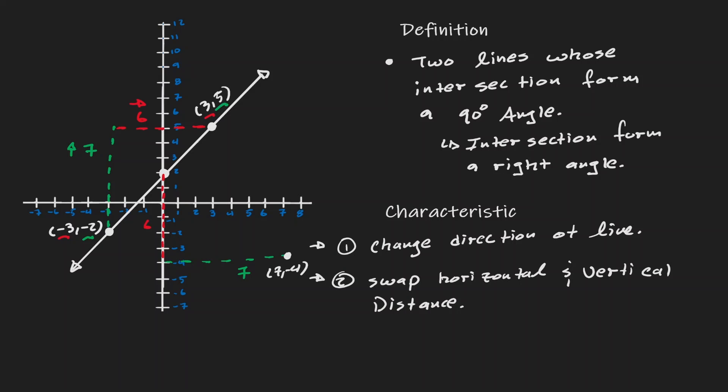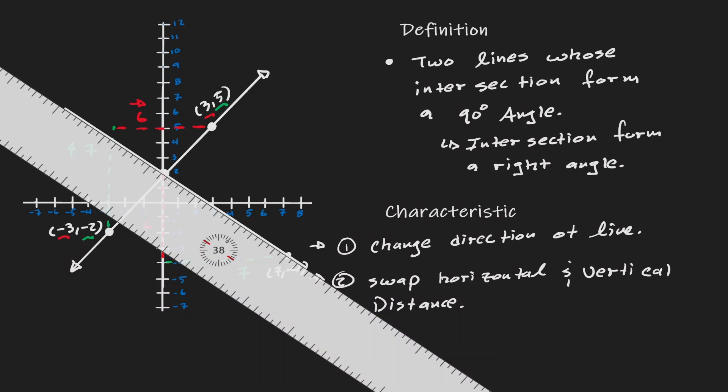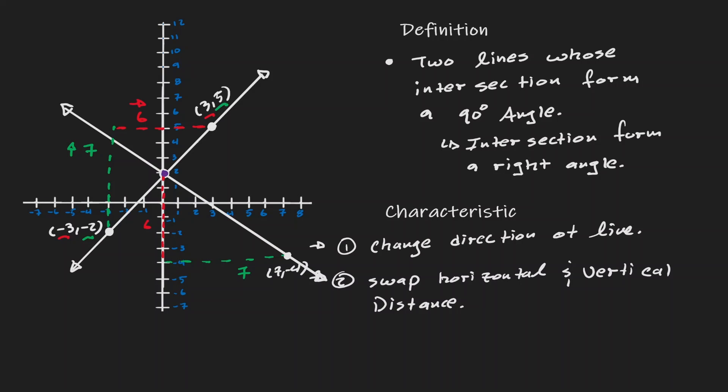Now if I connect those two points, at their intersection I am guaranteed to have 90 degrees.